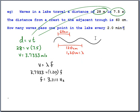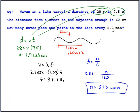That frequency means about three waves go by every second — wiggle, wiggle, wiggle. Now the question asks how many waves go by in two minutes, which is 120 seconds. Going back to the definition of frequency as number of cycles divided by time, we rearrange: n = f × t = 3.11 × 120, giving us 373 little ripples passing you as you float in the lake.